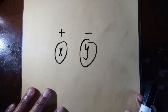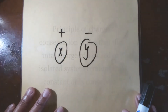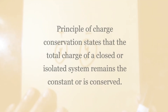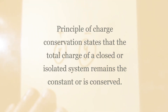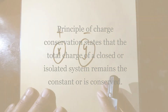The principle of conservation of charge states that in a closed or isolated system, the total amount of charge remains the same — charge cannot be created or destroyed. When an object changes its charge, it is due to a charge transfer from one object to another, but the total net charge remains the same.